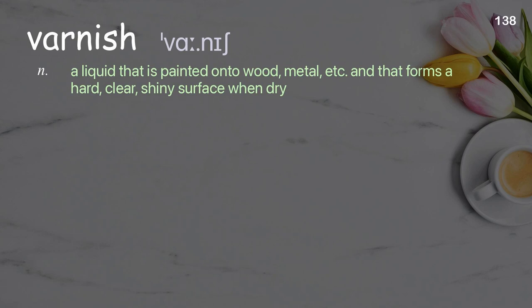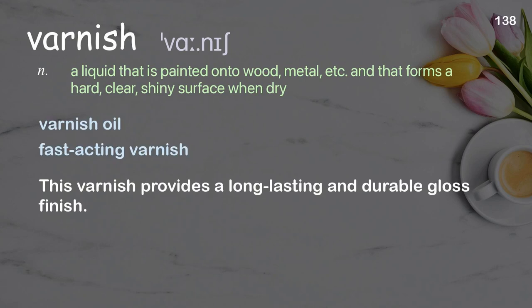Varnish. A liquid that is painted onto wood, metal, etc. and that forms a hard, clear, shiny surface when dry. Examples: varnish oil, fast-acting varnish. This varnish provides a long-lasting and durable gloss finish.